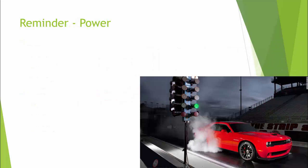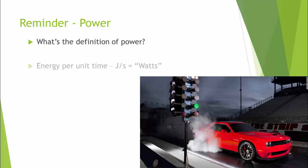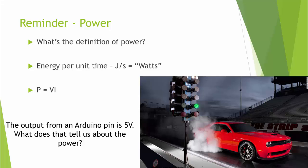So what's all this have to do with the Arduino? Well, first off, let's discuss power again for just a second. The definition of power is energy per unit time, or joules per second, or watts. In circuits, we learned that power can be calculated as voltage times current. The output from an Arduino pin that is switched on is 5 volts. I'd invite you to stop and think about what that tells us about the power output — pause if you want to work it out.